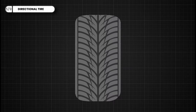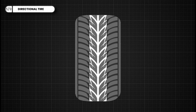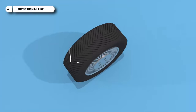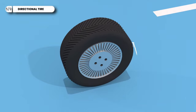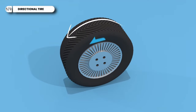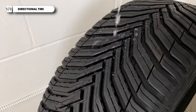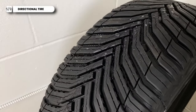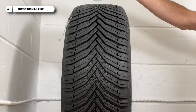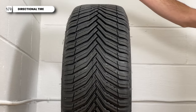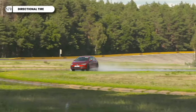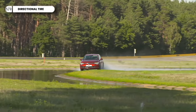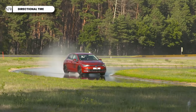Directional tires feature a tread pattern with grooves and channels designed to rotate in a specific direction, typically indicated by an arrow on the sidewall. This design enhances water evacuation and traction by channeling water away from the tire's contact patch, reducing the risk of hydroplaning and improving stability in wet conditions.